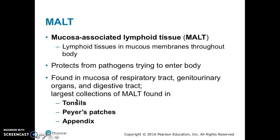Welcome back. We're starting with the MALT — MALT stands for Mucosa Associated Lymphoid Tissue. These are lymphoid tissues found in mucosa and mucous membranes throughout the body. The MALT protects us from pathogens trying to enter our body. We see the MALT in the mucosa of the respiratory tract, genitourinary tract, organs, and the digestive tract.